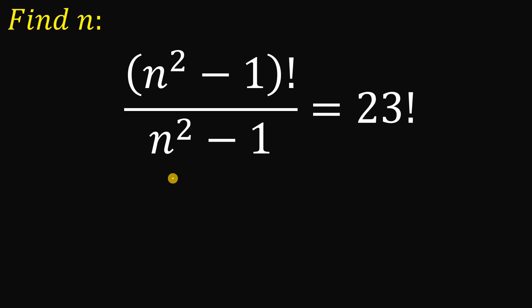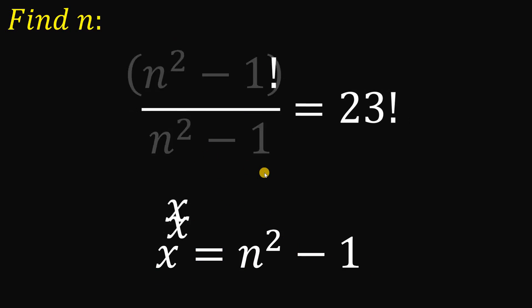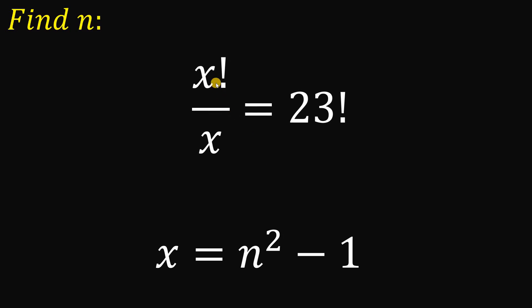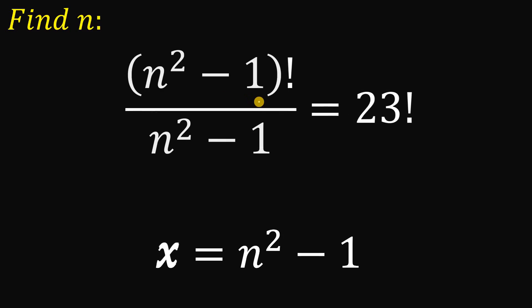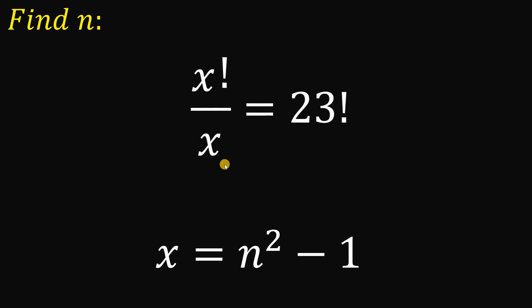Alright, so to answer this question, one thing to notice here is we have a common term of n squared minus 1. And one of the techniques that we use in this academy is when we have two common terms, what we're going to do is replace this with a single variable. So let's call this as x. So let x be equal to n squared minus 1. So all of this n squared minus 1 becomes x like this. So this becomes x factorial on the numerator and we have x on the denominator.